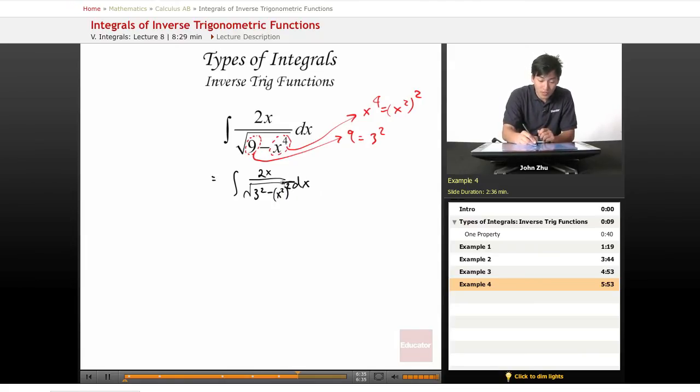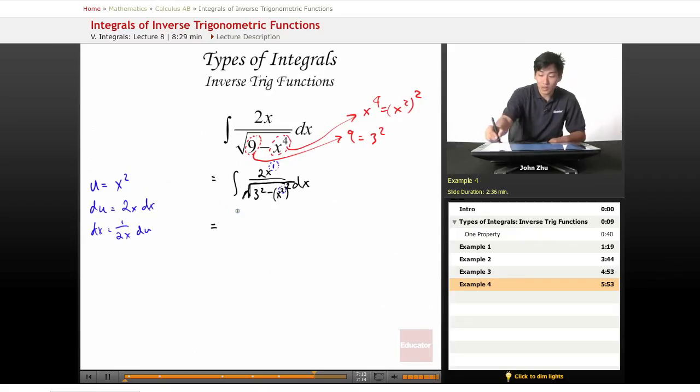But notice we have a 2x term in the numerator. What are we going to do about that? Well, we can notice that here x squared term needs to be substituted anyways for this to be used for an inverse trig property. So let's use u as x squared. And notice that the 2 term is 1 higher than this exponential term. So du will equal 2x dx, and dx equals 1 over 2x du.